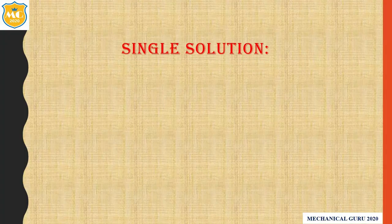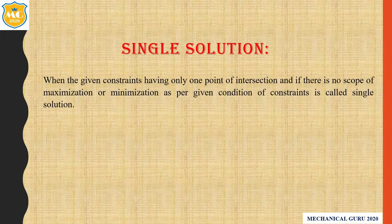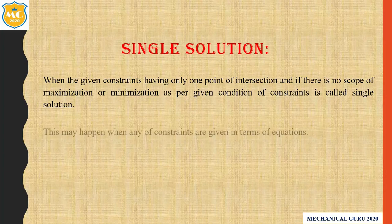First let's understand the single solution. When the given constraints have only one point of intersection, and if there is no scope for maximization or minimization as per the given condition of the constraints, it is called a single solution. In a single solution we get only one point. This may happen when any of the constraints are given in terms of equality.